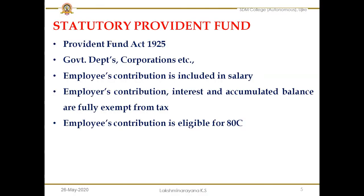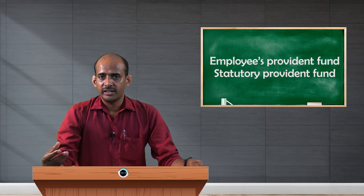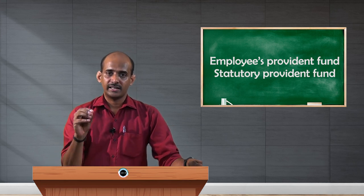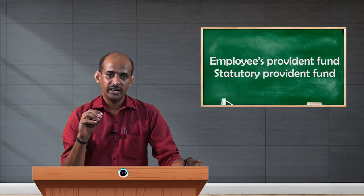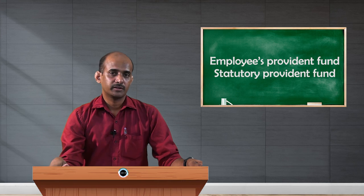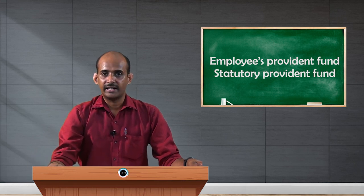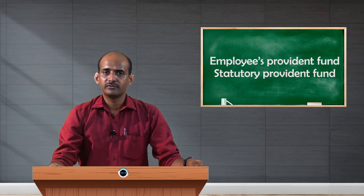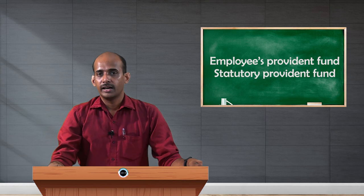One more important feature of this account is about eligibility for claiming deductions. Whatever the employee contributes towards this fund every month is eligible for deduction under Section 80C. Deductions under Section 80C are a very important provision for reducing the tax burden of an individual. When trying to reduce his tax burden, the employee can claim a deduction for his contribution made towards this fund. For example, if ₹1,800 is contributed monthly, then ₹1,800 multiplied by 12 gives the annual deductible amount from total salary income. These are the important conditions and features of this fund. With this I conclude the first type of Provident Fund — the Statutory Provident Fund — and the remaining Provident Funds will be explained in the coming videos.